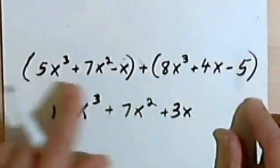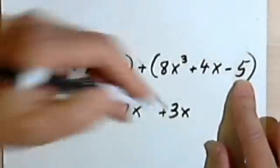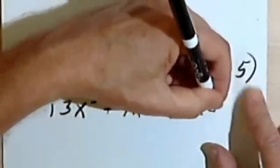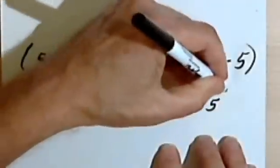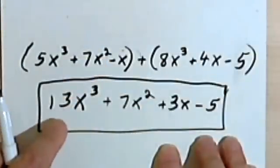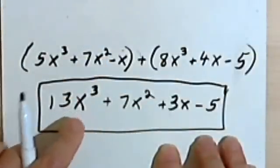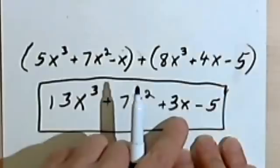And I've got no constant in here, but I've got a -5 in the second polynomial. So since there's nothing to add that to, I'll just leave it like it is. So here's my answer: 13x³ + 7x² + 3x - 5.